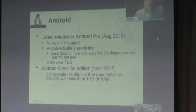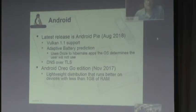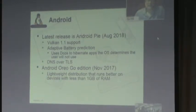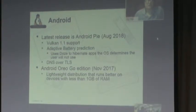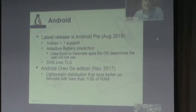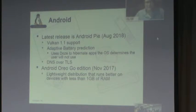One thing I wanted to comment on even though it's a little older: the previous Android release, Android Oreo, came out with a Go edition. Android Oreo Go is a lightweight distribution — it runs better on devices with less than one gig of RAM. There are still efforts to make Android lighter weight. I remember my original Android phone running Android Cupcake with 512 meg of RAM. One gig is not exactly small by embedded standards, but it is small by mobile phone standards.